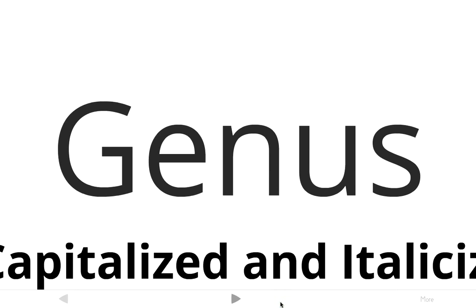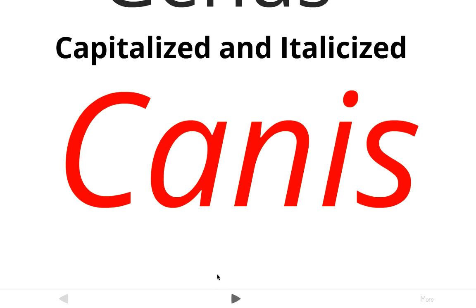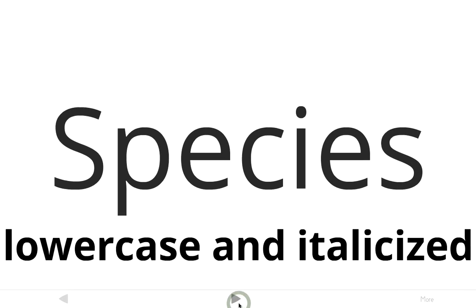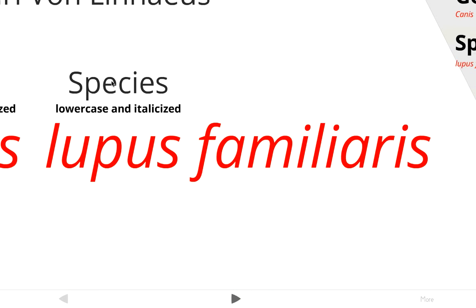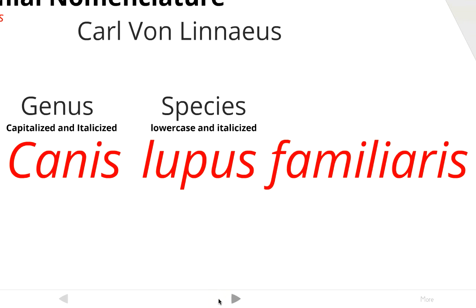The way the system writes these names is with the genus name capitalized and italicized — just like you capitalize your first name, you always capitalize the genus name. The species name is lowercase and italicized. So the scientific name for the domestic dog would be written as Canis lupus familiaris — including the subspecies familiaris. Most of the time you'll just have two names, but including the subspecies makes three words. These names are in Latin, so no matter where you go — whether scientists are in Germany or India — they all call this dog Canis lupus familiaris, making it universal.